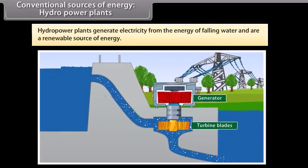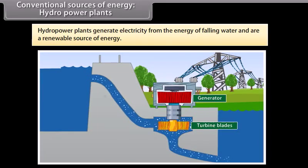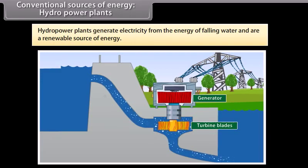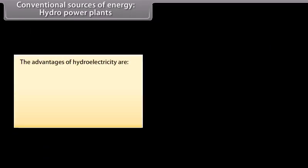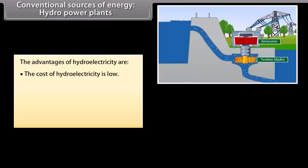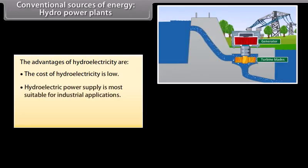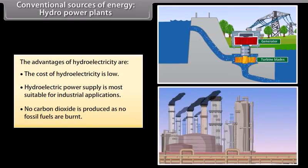Conventional sources of energy: Hydro power plants. Hydro power plants generate electricity from the energy of falling water. Hydro power is a renewable source of energy. The advantages of hydroelectricity are: the cost of hydroelectricity is low, hydroelectric power supply is more suitable for industrial applications, and no carbon dioxide is produced as no fossil fuels are burnt.